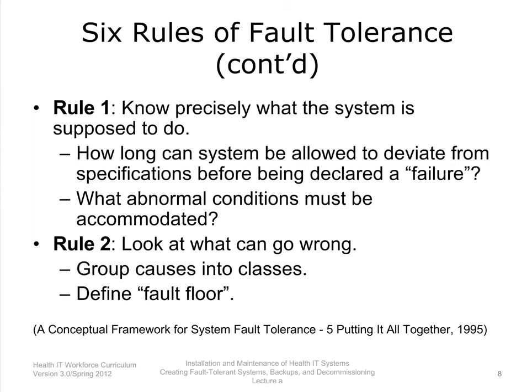Rule number 1: Know precisely what the system is supposed to do. Part of this process should be determining how long a system can be allowed to deviate from its specification before the deviation is declared a failure. It is not sufficient to know what the system is supposed to do under normal circumstances — it is also necessary to know what abnormal conditions the system must accommodate. It is virtually impossible to enumerate all possible faults; it is much more manageable to deal with classes of faults. This rule requires broad knowledge of the business environment, not just the specific system.